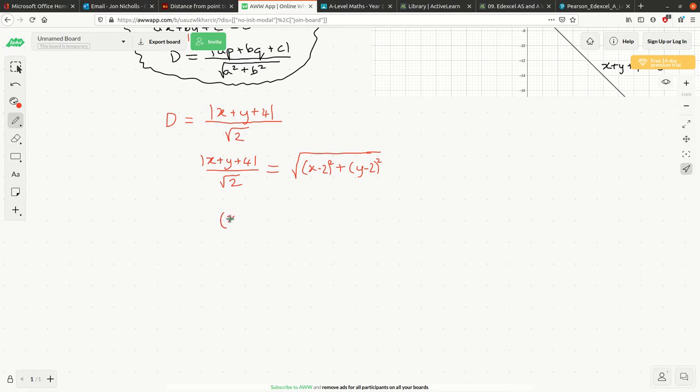So I get X plus Y plus 4 squared over 2 equals X minus 2 squared plus Y minus 2 squared. And I'm actually going to square those out. X squared minus 4X plus 4. Y squared minus 4Y plus 4. Now I'm going to have to square out that bracket. That's the one uncomfortable bit of this method because it's three terms in a bracket squared. That's always annoying.